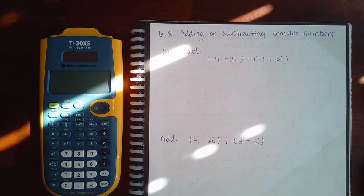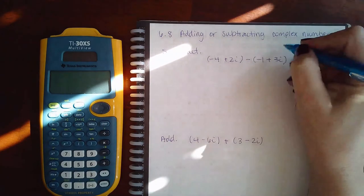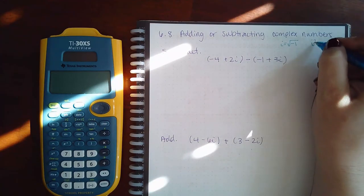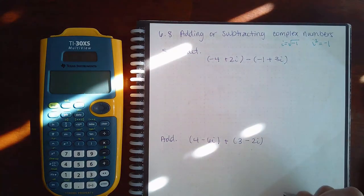I mentioned in an earlier video that i's kind of act like variables, but they are not variables. We know that i equals the square root of negative one, and that i squared equals negative one.